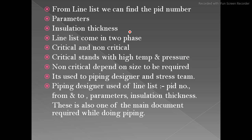From a line list we can find a P&ID number. This is very important if you are getting a lot of P&IDs. If you need to search which P&ID a line number belongs to, you need the line list. From the line list you can get the P&ID number in front of your line number, so you can easily identify which P&ID contains that line number.